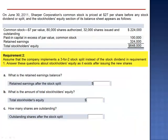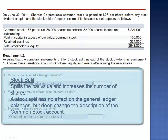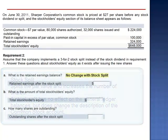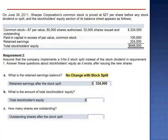Requirement 2 asks us to assume that the company implements a 3-for-2 stock split instead of the stock dividend. What would the retained earnings balance be after the split? A stock split is splitting the par value — it increases the number of shares and decreases the par value. There is no change with a stock split; total retained earnings remains at $324,000.